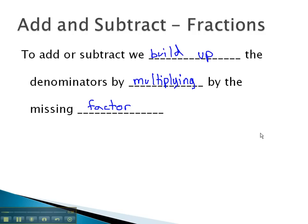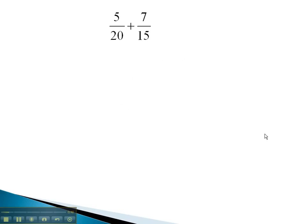Let's take a look at an example. In this problem, you may notice we have denominators of 20 and 15. 20 can be factored to 4 times 5, and 15 can be factored to 3 times 5.